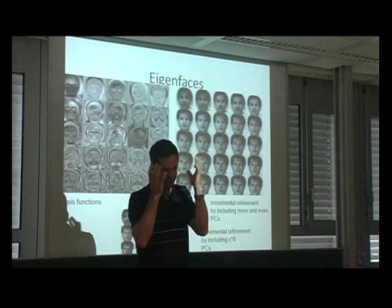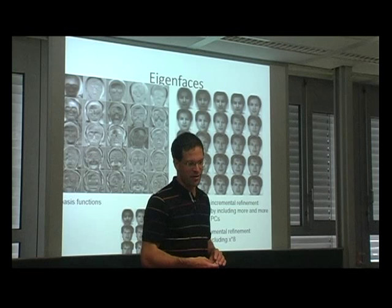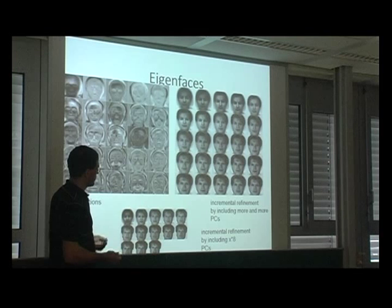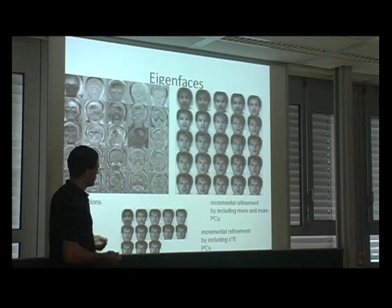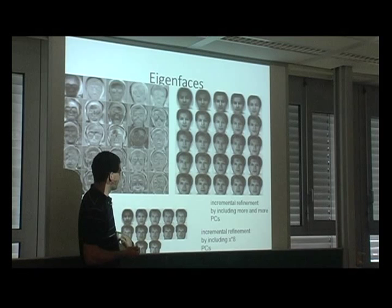Generally, as you go to higher dimensions these components become noisier and harder to interpret. People in those days used eigenfaces to improve classification results, but you can also use it for compression: instead of using — this is much more than 30 by 30 pixels, perhaps 50 by 50 — instead of using 2500 components you can use just 50 or so to explain a face.